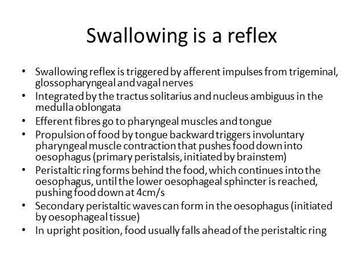This automatic response is triggered by afferent impulses from the trigeminal nerve, the glossopharyngeal nerve, and the vagal nerves. These nerves are stimulated by the presence of food and the motions of chewing. They send signals into your brainstem, specifically the solitary tract, also known as the tractus solitarius, and the ambiguous nucleus, also known as the nucleus ambiguus, and they're both in the medulla oblongata.